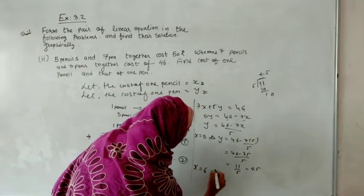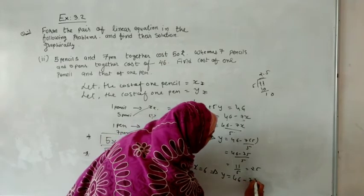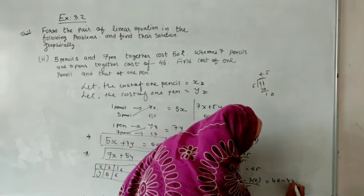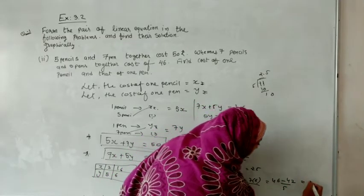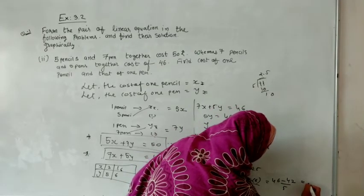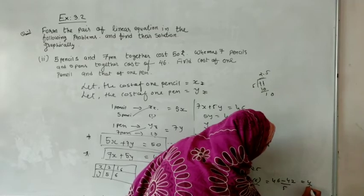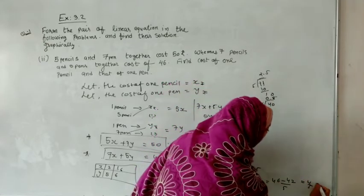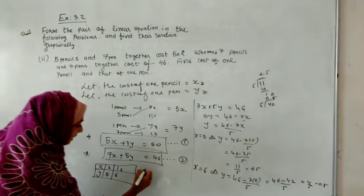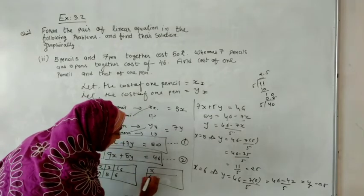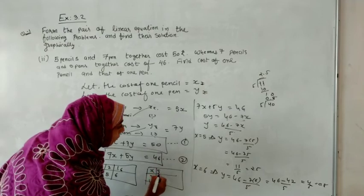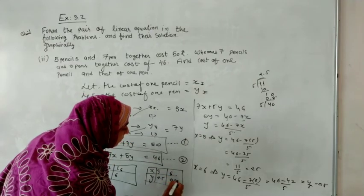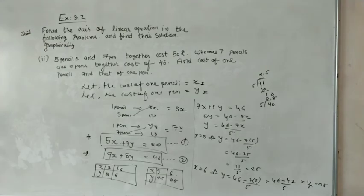If x equals 6, then y equals 46 minus 42 divided by 5, giving 4 divided by 5, so y equals 0.8. The table for equation 2: x = 5, y = 2.2; x = 6, y = 0.8. Now we may plot these points on the graph to find the solution.